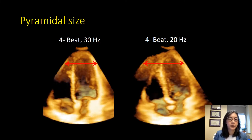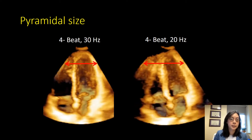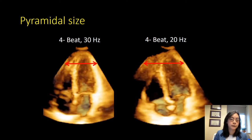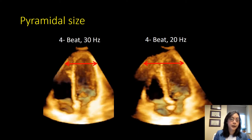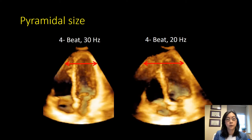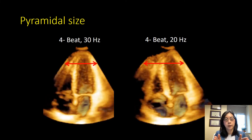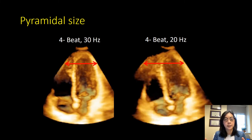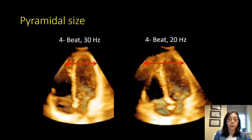Here are two examples of a left ventricle, both acquired using four-beat acquisition. The one on the left uses a smaller pyramid showing only the left ventricle and left atrium, while the one on the right includes the entire heart — left ventricle, right ventricle, left and right atria. The smaller pyramid on the left gives a higher volume rate of 30 Hz versus 20 Hz on the right. With the higher volume rate the walls come in much more smoothly, whereas at 20 or even 15 Hz you could miss end-systole and get a wrong ejection fraction.